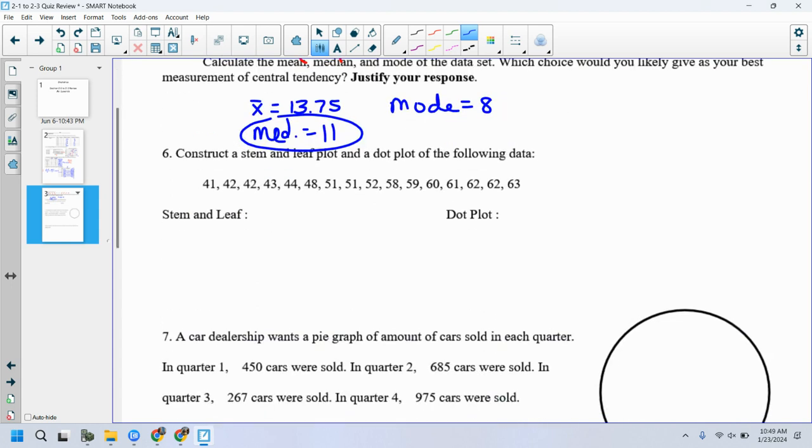All right. Stem and leaf plot and a dot plot. Okay. So look at my stems here. It looks like we had a four, a five, and a six. So I'm going to say a four, a five, and a six here. Don't forget to put a key. Remember, we talked about that. Don't forget to put a key. Let's just use the first one. Four, one is going to equal 41.